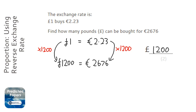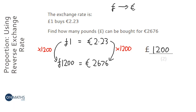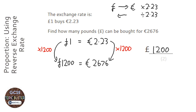There are different ways of thinking about it. What you can think about is: to get from pounds to euros, we times by 2.23. So therefore, to go the other way, we're going to divide by 2.23. And so you just do 2,676 divided by 2.23. There are loads of different other ways of doing it — you can do it with ratios as well.